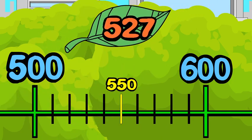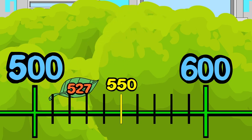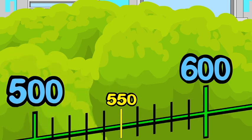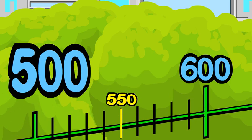Step three: locate 527 on the number line. 527 is less than 550, so now you are ready for step four. 527 is closer to 500 than to 600, so to the nearest hundred, 527 rounds down to 500.